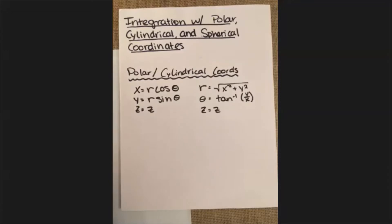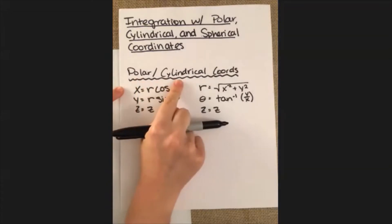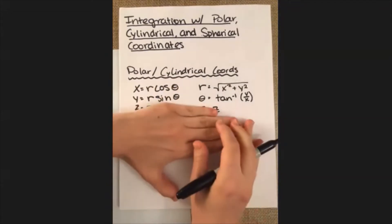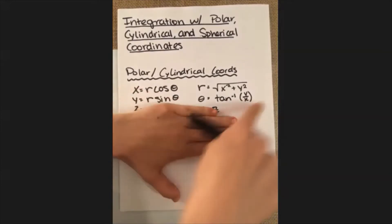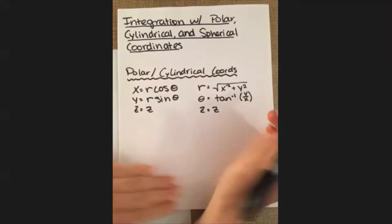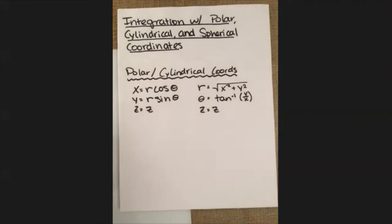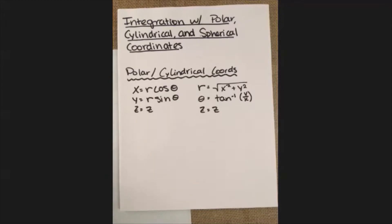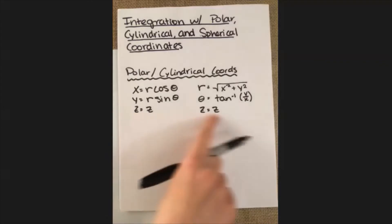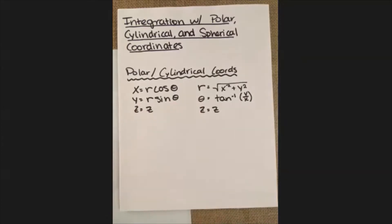The reason I say polar slash cylindrical coordinates is because if we ignore the z equals z part, everything here is working in polar coordinates. Cylindrical coordinates just means we let the z component be whatever z was originally. So cylindrical and polar coordinates are very closely related — they're basically the same thing, just adding a third dimension.